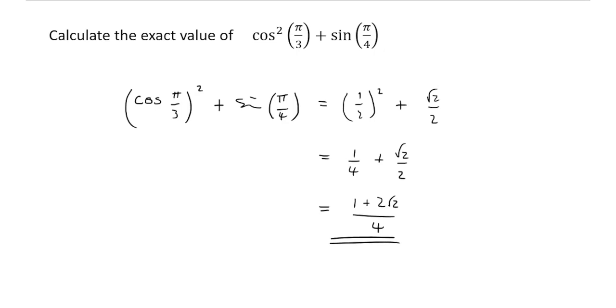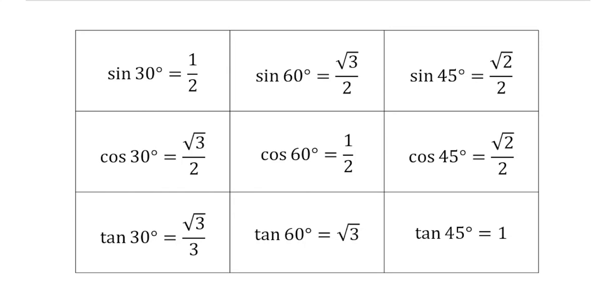So guys, basically what you need to know is you need to know that for the angles 30, 60, and 45 degrees, or rather pi by 6, pi by 3, and pi by 4, you have got specific exact values for the sine, cos, and tan. You need to know that, and then you need to be able to simplify expressions that involve those angles. I hope that's all clear, and I'll see you again next time.